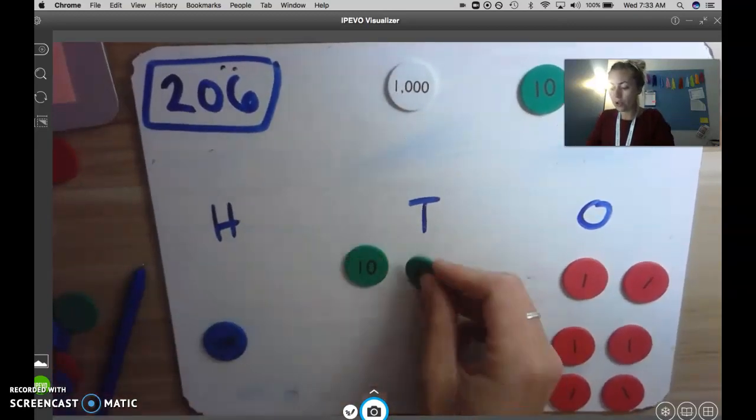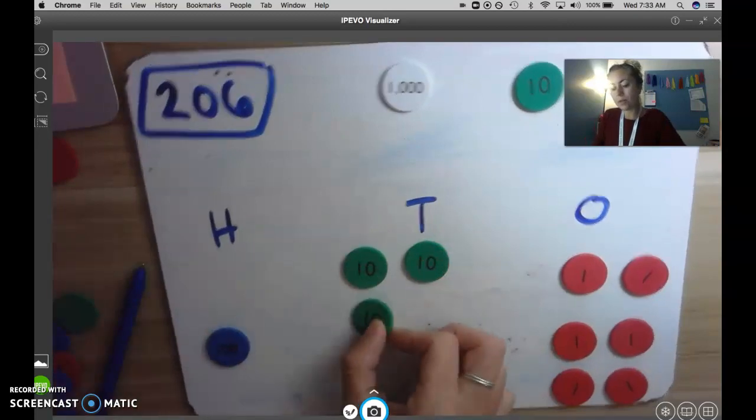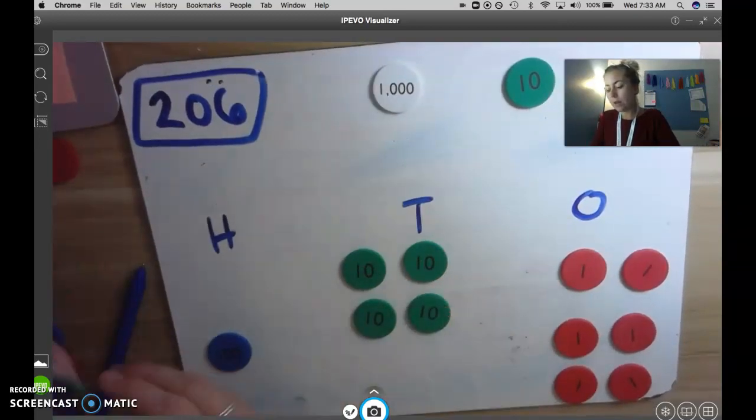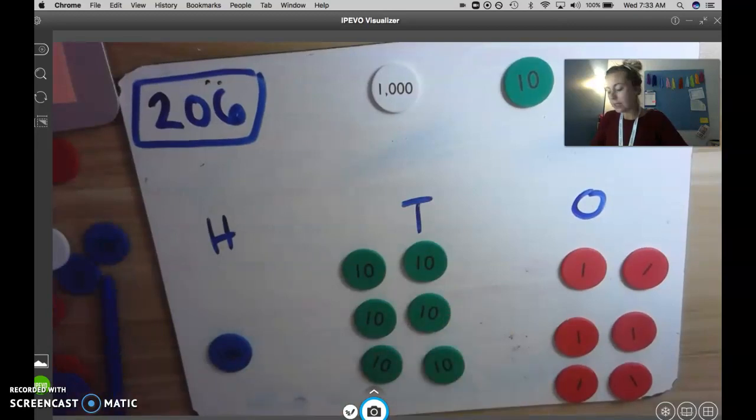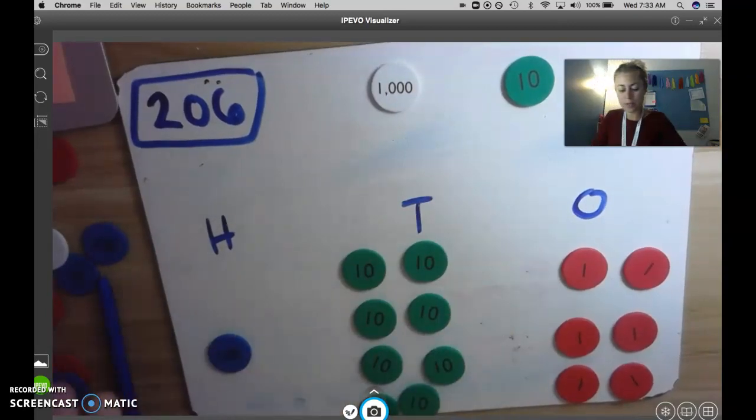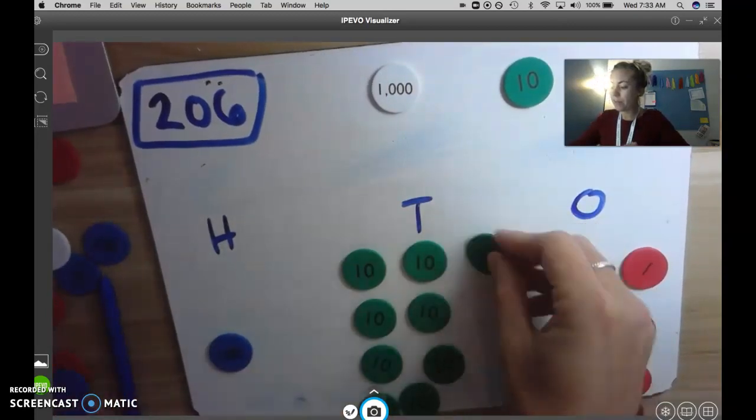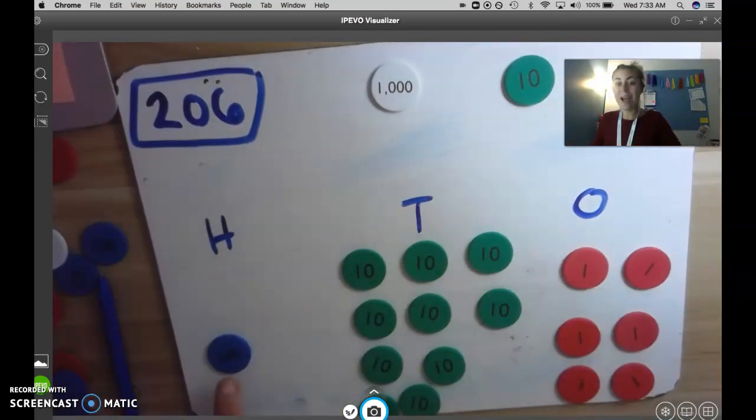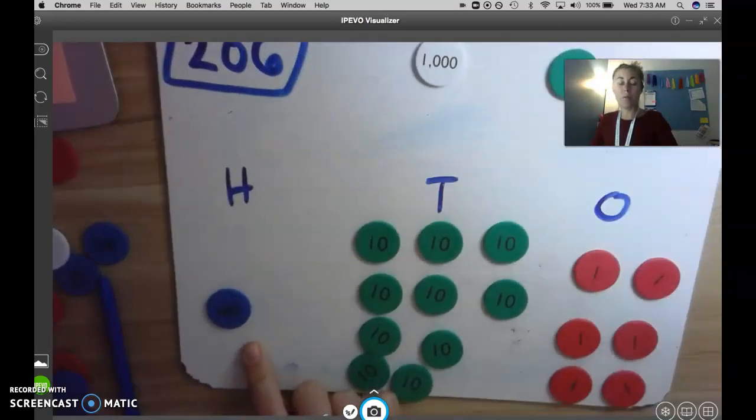One group of 10, two groups of 10, three groups of 10, four groups of 10, five groups of 10, six groups of 10, seven groups of 10, eight groups of 10, nine groups of 10, 10 groups of 10. Now I'm going to switch out my other 100.